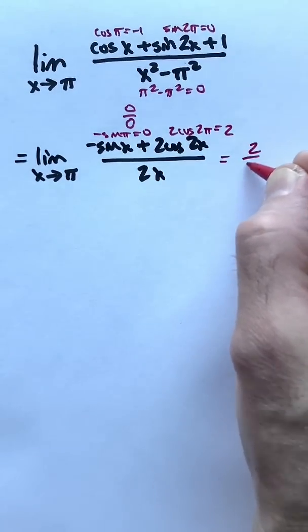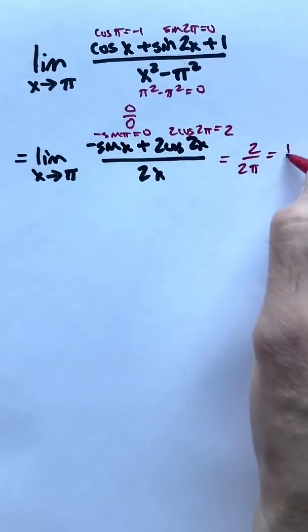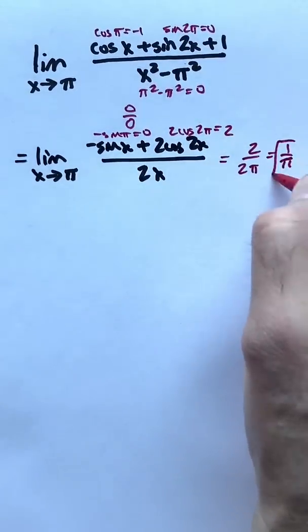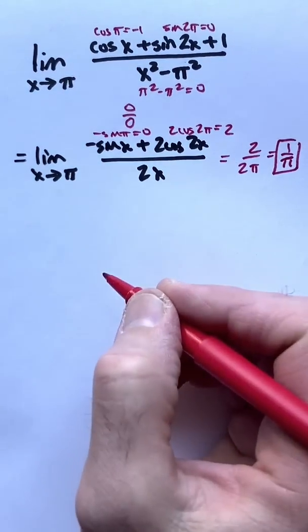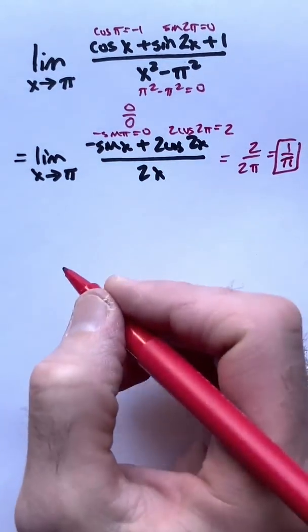This limit exists and equals 2 over 2 pi, which is 1 over pi. That's the answer. Notice we did not use L'Hopital's rule again. If you use L'Hopital's rule again, you would get the wrong answer.